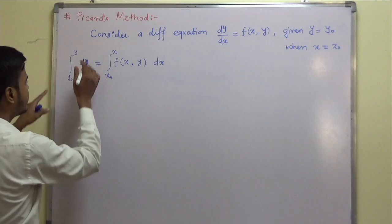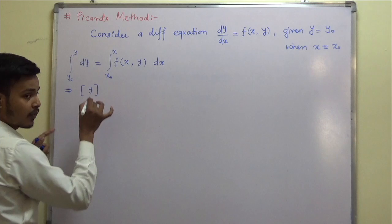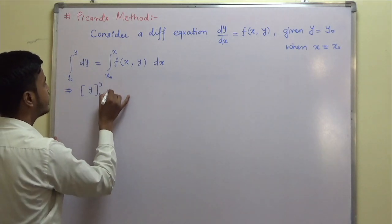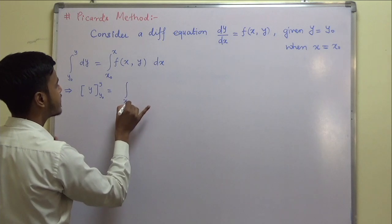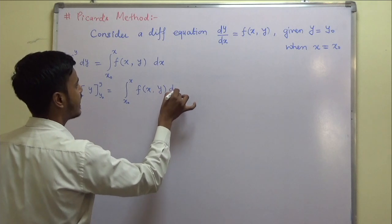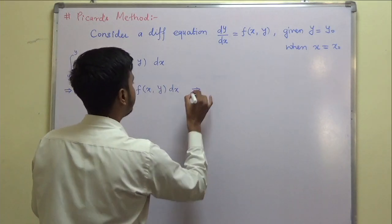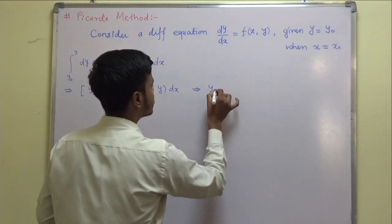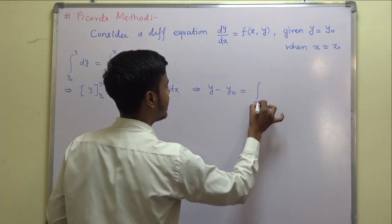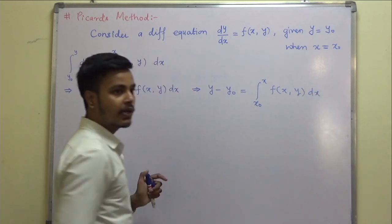Applying the integration, the integral of 1 dy with limits y₀ to y gives y, and the right side is the integral from x₀ to x of f(x, y) dx. Applying the upper limit minus lower limit, we get y − y₀ = ∫[x₀ to x] f(x, y) dx.